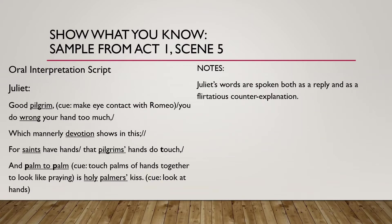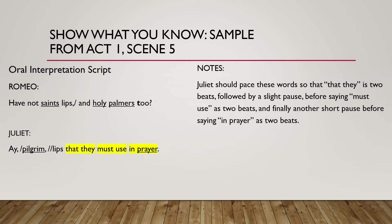'Good pilgrim, you do wrong your hand too much, which mannerly devotion shows in this. For saints have hands that pilgrims' hands do touch, and palm to palm is holy palmer's kiss.' Did you notice how Juliet's words were spoken both as a reply but also as a flirtatious counter-explanation? 'Have not saints lips and holy palmer's too? I, pilgrim, lips that they must use in prayer.' Hopefully you noticed Juliet's pacing — 'that they' as two beats, a slight pause, 'must use' as two beats, another short pause, then 'in prayer' as two beats, emphasizing the word 'prayer.'